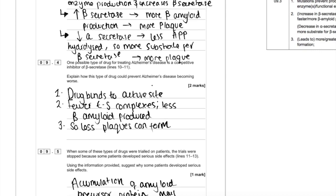Part four: one possible type of drug for treating this disease is a competitive inhibitor of beta secretase. Explain how this type of drug could prevent Alzheimer's disease becoming worse. This is testing your knowledge of competitive inhibitors, but in a different context than you're used to. We know that competitive inhibitor binds and blocks the active site. I've said there's fewer enzyme substrate complexes formed. It wasn't on the mark scheme in this case, but always good to put it.